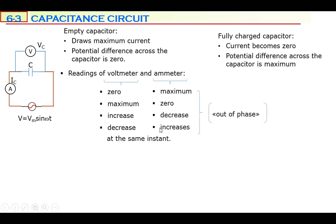The ammeter and voltmeter also change inversely: as voltmeter reads zero, ammeter reads maximum, and vice versa — increasing, decreasing, decreasing, increasing. This is also out of phase, but in the opposite manner to the inductor. In the inductor, electric current was lagging; but in a capacitor, electric current is leading — potential difference lags behind.